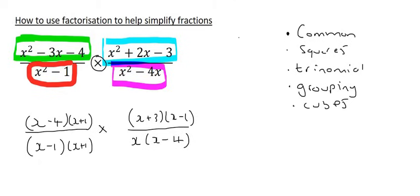Now here comes the fun part. We can simply cross cancel. So we can cancel x minus 4 with x minus 4. You can cancel x minus 1 and x minus 1. These x plus 1s can cancel, as long as one of them is at the top and one of them is at the bottom. And what we'll end up with at the top is x plus 3, and x at the bottom.